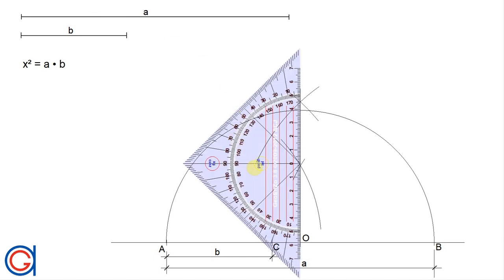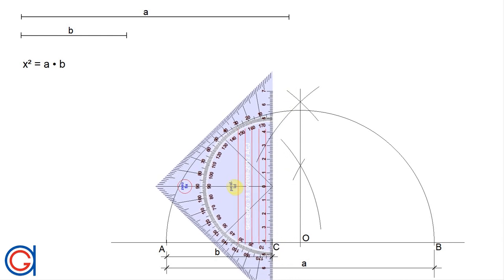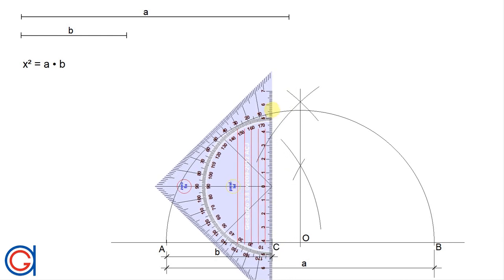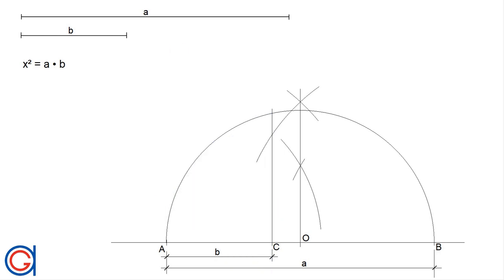And now to continue, we're going to draw a vertical perpendicular line from point C until it cuts our semicircle at a new point that we will call D.